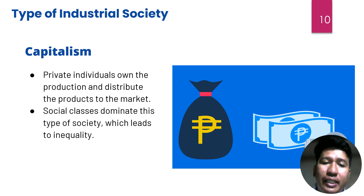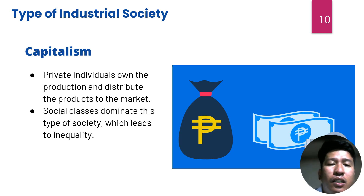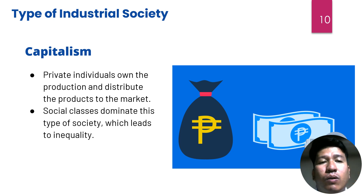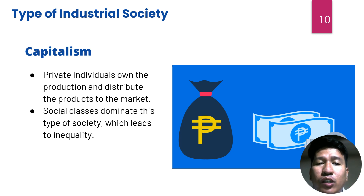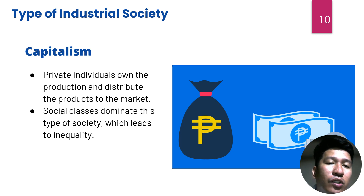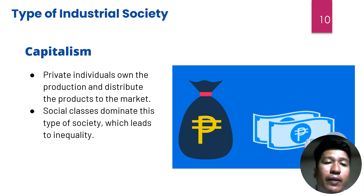There are different kinds of industrial societies. A prevalent type is capitalist society, where private individuals own the means of production and distribute products to the market. Social classes dominate this type, which leads to inequality. Societies can also be socialist, which is also considered industrial in terms of productivity, but ownership and distribution differ from capitalism.